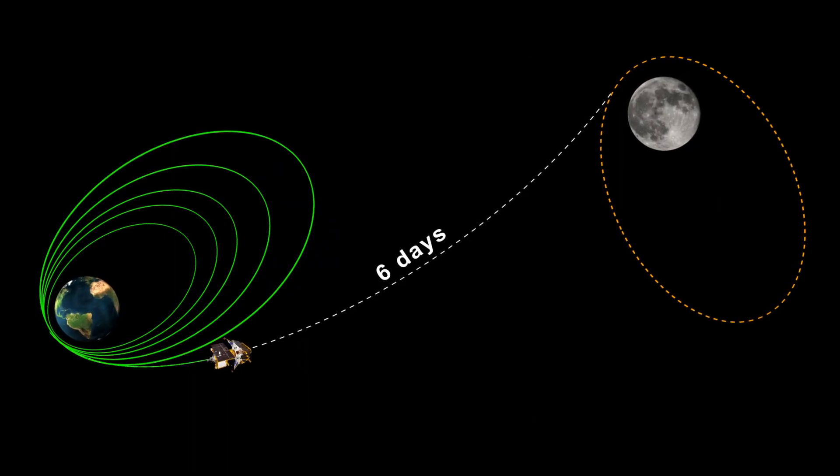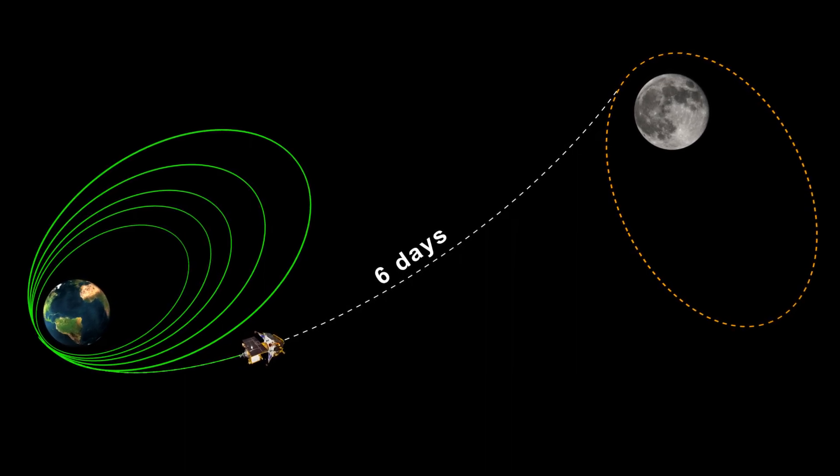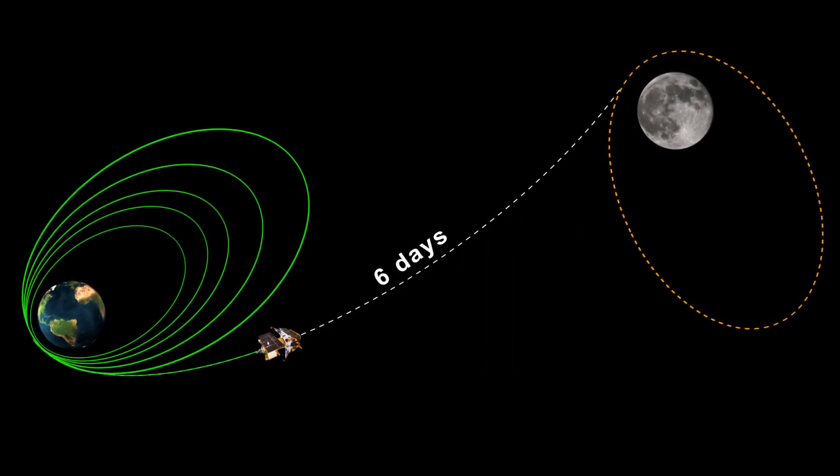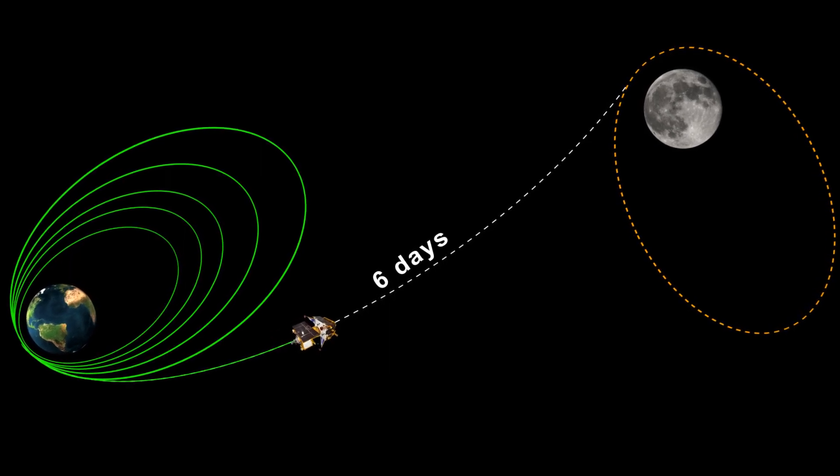Since spacecraft need to have high velocity to attempt a slingshot, it is done at perigee. Another reason is to travel towards the moon, the spacecraft's angle will have to change, which can be easily done if the TLA is done at perigee.